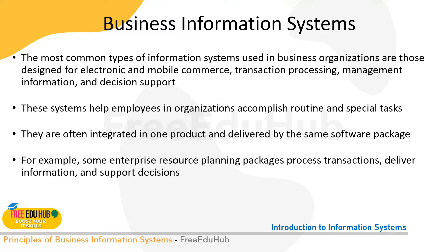Business information systems have three levels. The operational level handles day-to-day running tasks and includes transaction processing systems, customer relationship management systems, and supply chain management systems. The tactical level includes management information systems and decision support systems, supporting mid-term decisions made by middle managers. The strategic level includes executive support systems, which support long-term strategic decisions made by senior managers based on goals for the next few years.